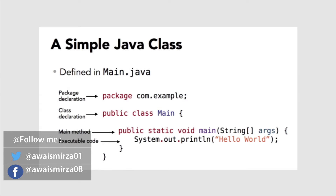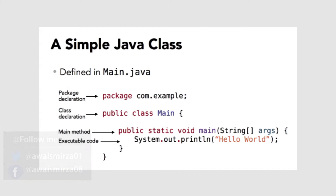Each source code file will contain one public class. The name of the class is Main — that is the identifier — and it implements a single method, also named main. Notice that the method identifier uses an initial lowercase letter. A console application always has this main method. It always has the three keywords: public, static, and void. Public means the method is available to the entire application. Static means this method can be called directly from the class definition rather than from an instance of a class. Void means the method doesn't return any value. The required main method must also receive an array of strings as an argument or parameter. It must be an array of strings but the name doesn't necessarily have to be 'args' — you can name it anything you like.